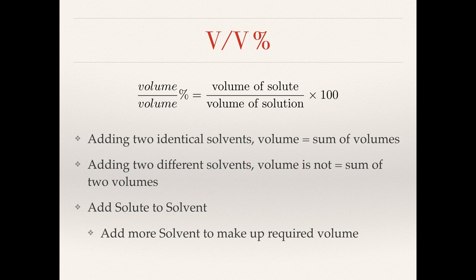If we add 500 millilitres of water to 500 millilitres of water, we get 1000 millilitres — adding chemically identical solutions always gives the expected sum of volumes. But if instead we have 50 millilitres of water and 50 millilitres of IMS, we won't actually get 100 millilitres of solution. We will actually get roughly 96 millilitres. This is due to the bonding between the molecules in the water and the ethanol — there's slightly stronger hydrogen bonding between them, which reduces the space the molecules take up and reduces the total volume of solution. So we would actually need to add more solvent to make up the required volume.